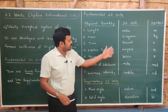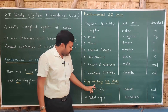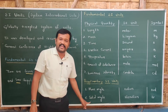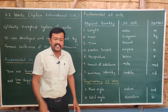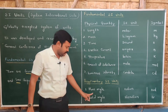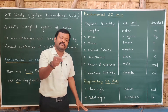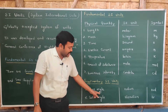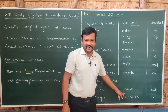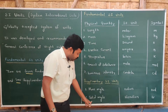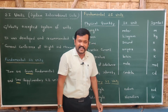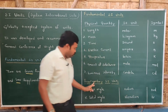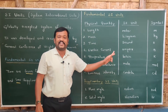Along with the seven fundamental SI units, there are two supplementary SI units corresponding to two supplementary physical quantities: plane angle and solid angle. The angle measured in two dimensions is plane angle, and the angle measured in three dimensions is solid angle. Plane angle is measured in radian, symbol 'rad', and solid angle is measured in steradian, symbol 'sr'.